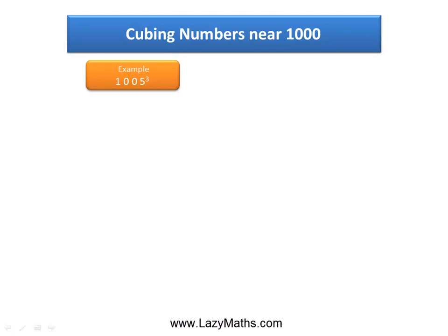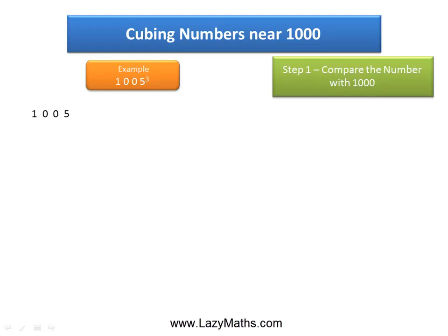Here's an example of cubing numbers near 1,000. We'll cube 1,005. The first step is to compare 1,005 with 1,000. So 1,005 minus 1,000 is equal to positive 5. The plus sign is used because 1,005 is more than 1,000.